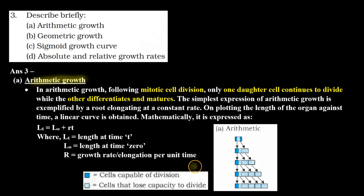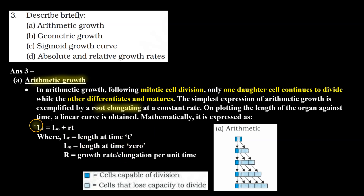So this is arithmetic growth, where there is mitotic division. From mitotic division of the cell, 2 new cells are made — one does not show further division, and one cell continues to divide. This is exemplified by root elongation. If we plot root elongation with time, we get a linear curve. The mathematical expression is L = L0 + RT, a straight line equation similar to what we study in physics.